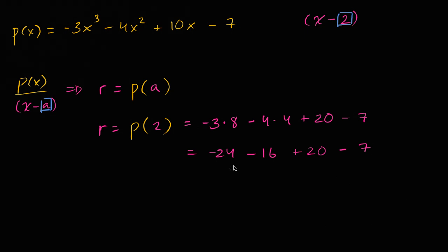And so that gives us, let's see, negative twenty-four minus sixteen, this is negative forty. All right, I'm just going to do it step by step. So this is negative forty, plus twenty, is negative twenty, minus seven is negative twenty-seven.